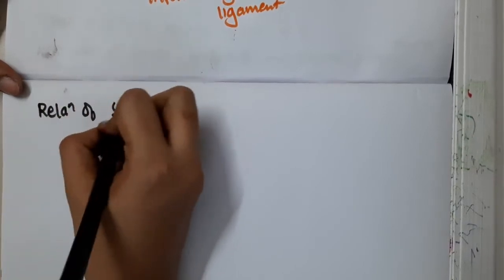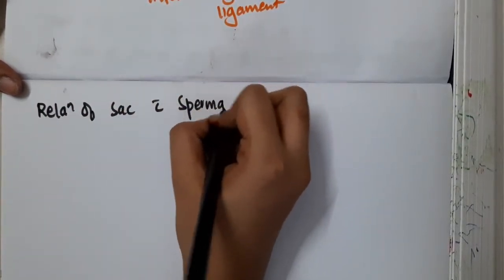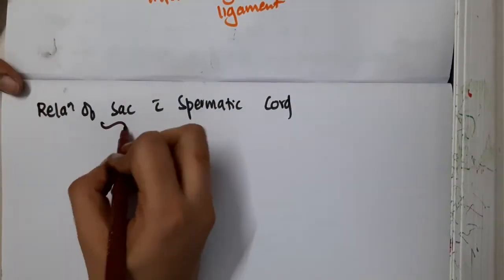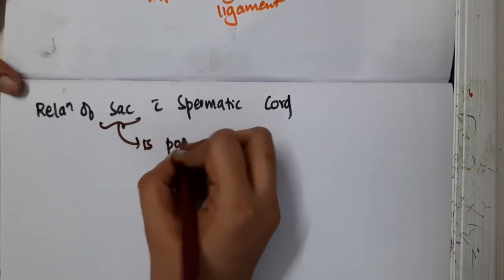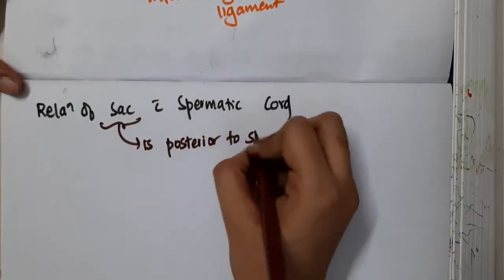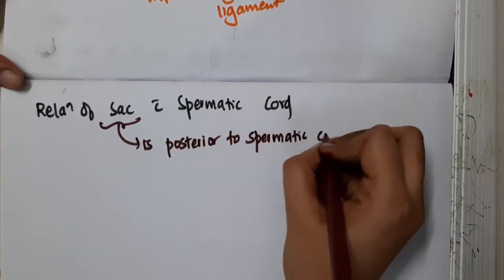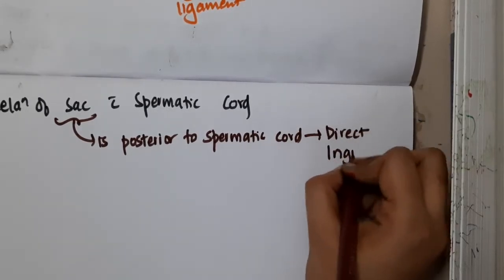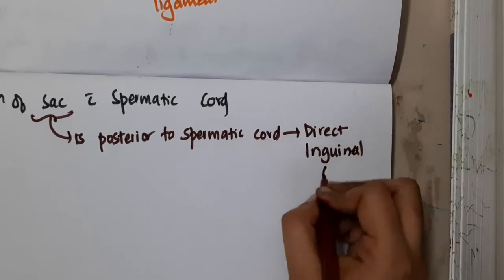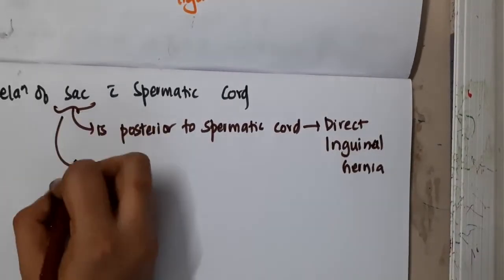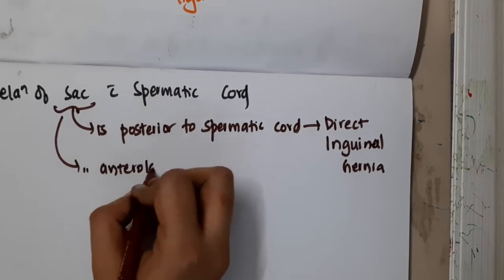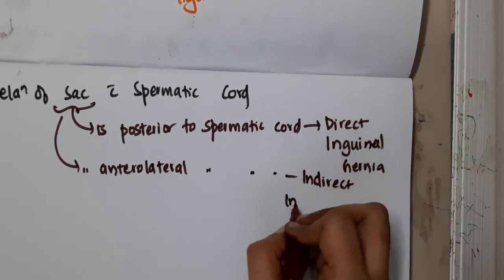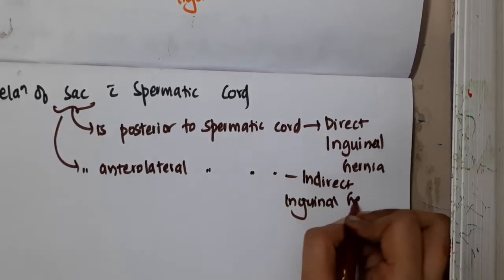If you were asked about the relationship of the sac with the spermatic cord: in direct inguinal hernia, the sac is posterior to the spermatic cord. In indirect inguinal hernia, the sac is anterolateral to the spermatic cord.